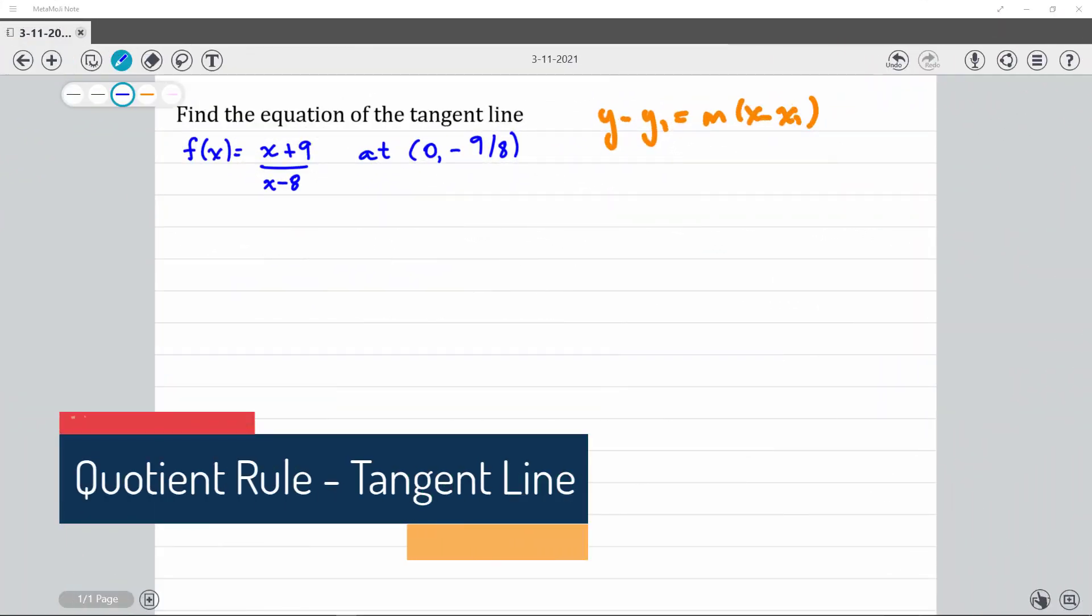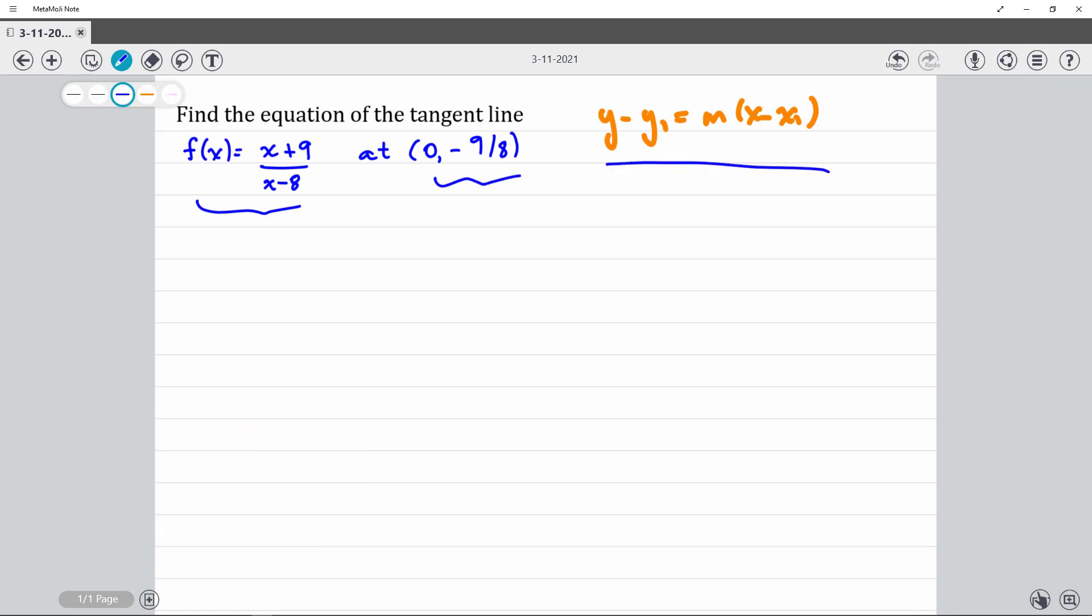I want to find the equation of the tangent line for this function at this point. I can use the point-slope form. So I have y1 given to me, and I have x1 given to me, but I don't know m.